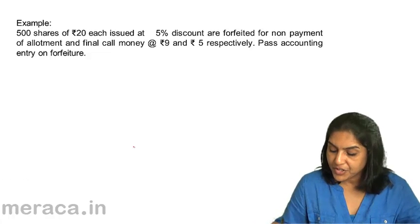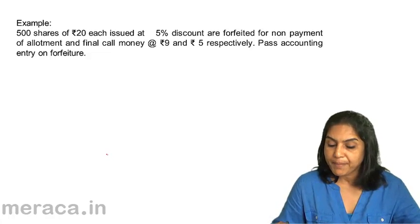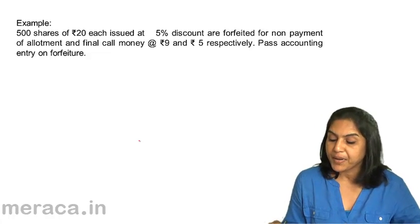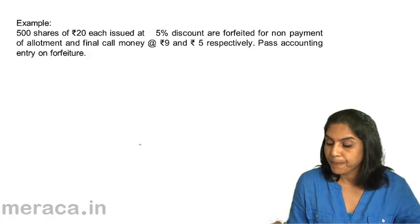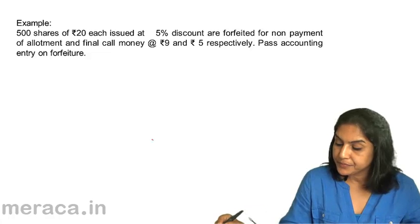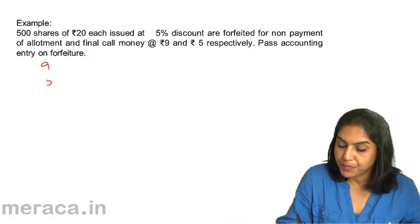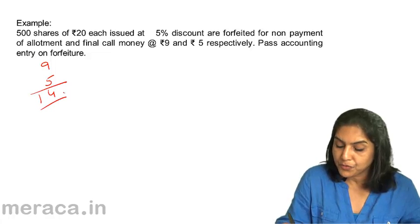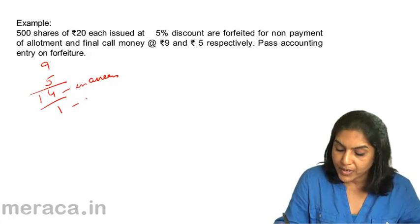Next — 500 shares of Rs 20 each issued at 5% discount are forfeited for non-payment of allotment money of Rs 9 and final call money of Rs 5. Pass the accounting entry on forfeiture. Allotment Rs 9 not paid, final call Rs 5 not paid — total Rs 14 is in arrears. The shares were issued at a discount of 5%. 5% of Rs 20 is Rs 1, so Rs 1 is the discount.